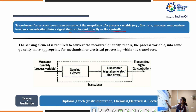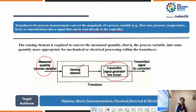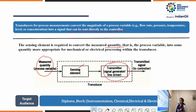This is a block diagram. The first block is a sensing element, which senses any non-electrical parameter called the measured quantity or process variable. The sensor senses it and sends it to the transmitter or transducer for conversion of that physical parameter into electrical form. There, signal conditioning and amplification take place, and finally the signal is sent to the controller. The sensing element converts the measured quantity into something more appropriate for mechanical or electrical processing within the transducer.